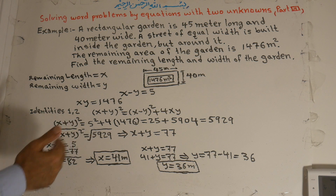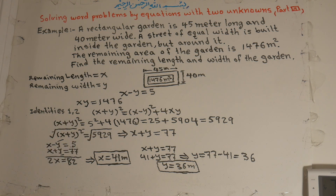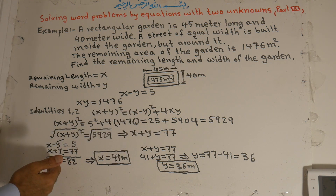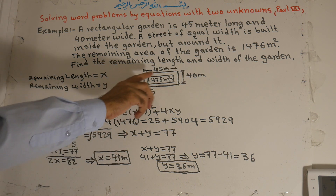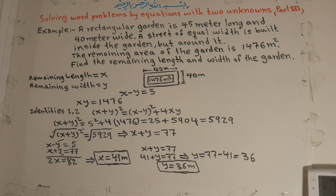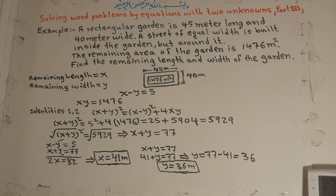x plus y equals the square root of 5929, which equals 77. We have two equations: x minus y equals 5 and x plus y equals 77. Solving them, x equals 41 meters — the remaining length of the garden — and y equals 36 meters — the remaining width. Thank you for watching. Please like, subscribe, share the video with your family and friends, and press the notification bell for more videos. Have a great and wonderful day. Bye-bye.